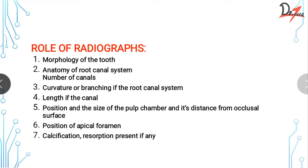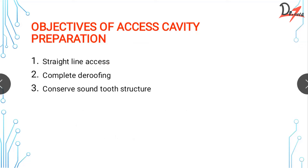There are three main objectives of access cavity preparation. The first is straight line access — from the orifice to the apex the file should not curve; you can verify this with radiographs or RVG. Without straight line access, there will be too much tension and pressure on your file and you'll end up fracturing it. The new concept of minimally invasive endodontics does not prefer straight line access, but in India we reuse files after sterilization, so to avoid fractures you need straight line access.